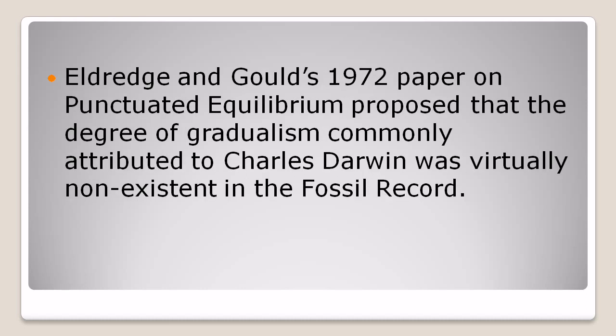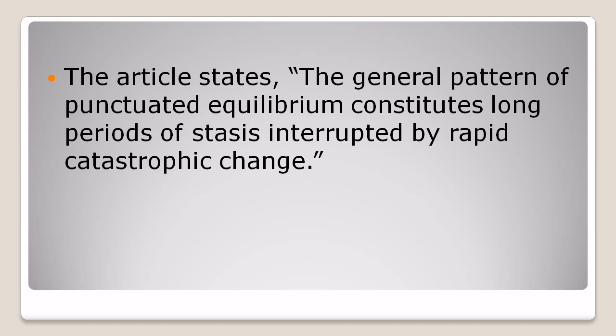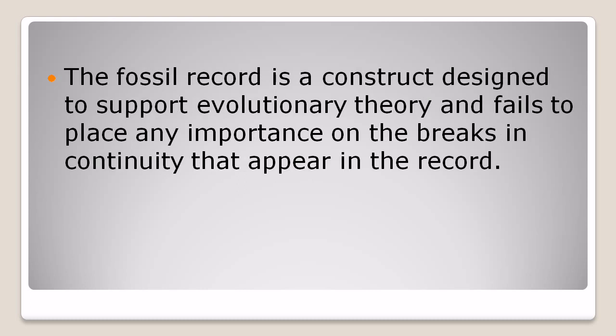Aldridge and Gould's 1972 paper on punctuated equilibrium proposed that the degree of gradualism commonly attributed to Charles Darwin was virtually nonexistent in the fossil record. The article states: the general pattern of punctuated equilibrium constitutes long periods of stasis interrupted by rapid catastrophic change. The fossil record is a construct designed to support evolutionary theory and fails to place any importance on the breaks in continuity that appear in the record.